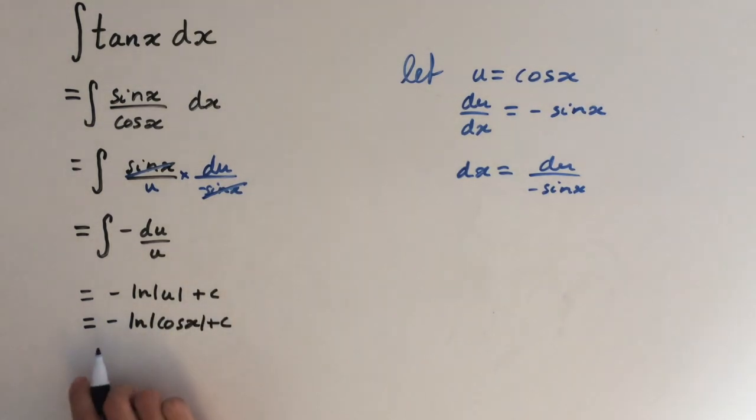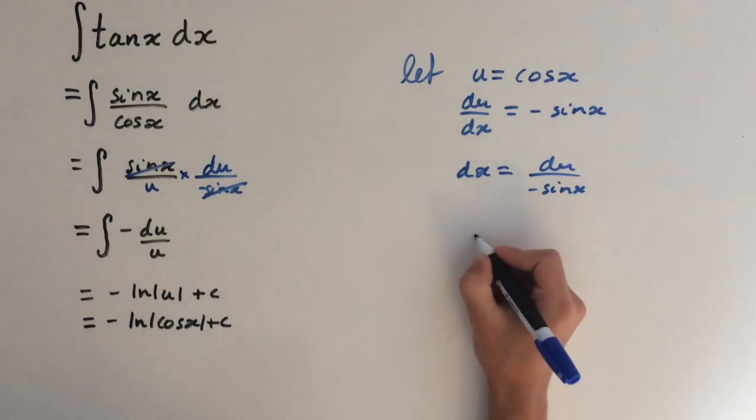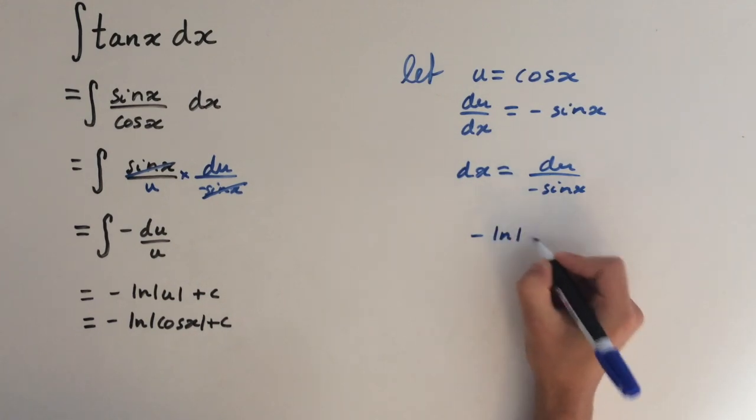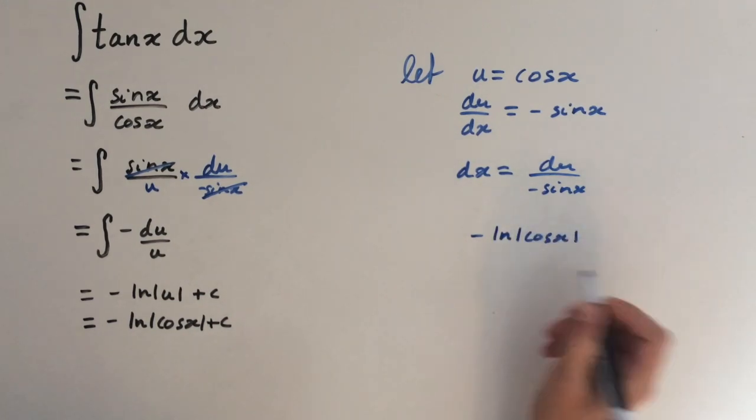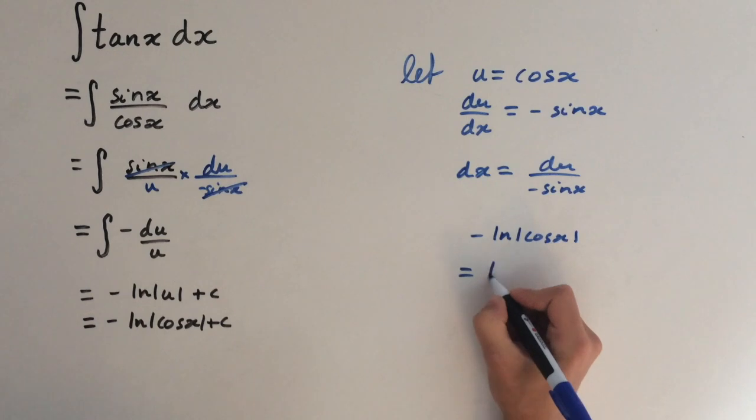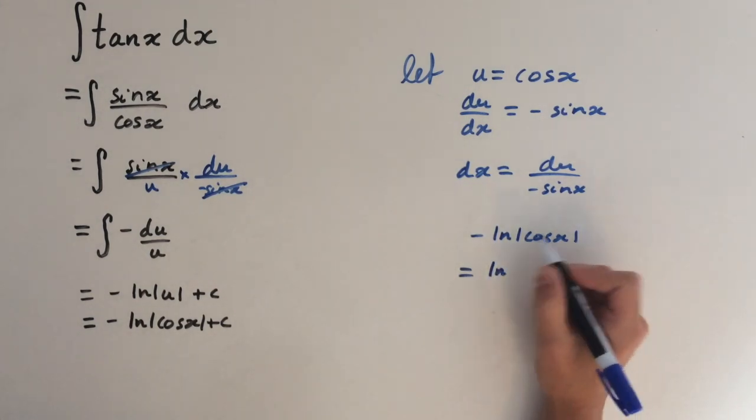But we can simplify this, because minus ln of cosine of x, this equals, we can bring the minus up to the power, because this is a logarithm law.